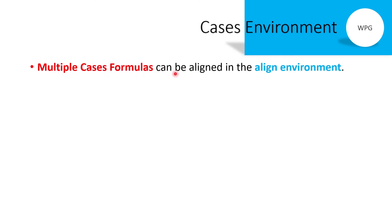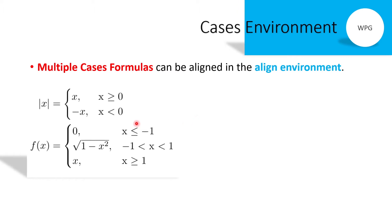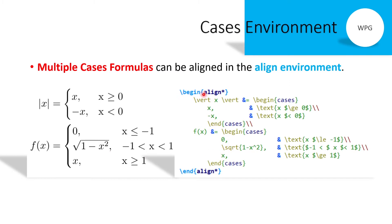Multiple cases formulas can also be aligned in the aligned environment. For example, two formulas are aligned with respect to the equal sign, where both formulas have multiple cases — the first has two cases and the second has three. Write the begin align star environment, then the first formula with vertical bar x vertical bar equal begin cases, and similarly the second formula f(x) equal begin cases. To align both formulas with respect to the equal symbol, place the ampersand symbol before the equal sign in each formula.